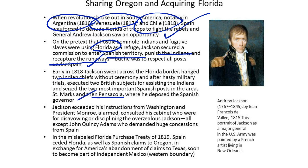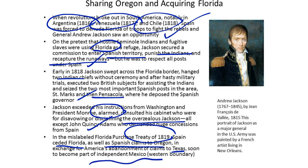Jackson exceeded his instructions from Washington, and President Monroe, alarmed, consulted his cabinet, who wanted to disavow or discipline the overzealous Jackson — all except John Quincy Adams, who demanded huge concessions from Spain. In the mislabeled Florida Purchase Treaty of 1819, Spain ceded Florida, as well as Spanish claims to Oregon, in exchange for America's abandonment of claims to Texas, soon to become part of independent Mexico.